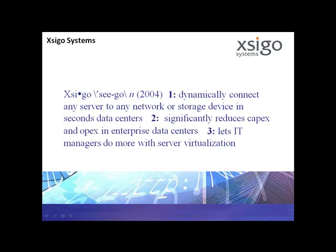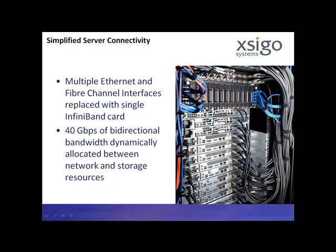Virtual I.O. offers dynamic connections from any server to any network or storage device in seconds, without server reboots. SEGO simplifies server connectivity by replacing multiple physical Ethernet and fiber channel interfaces with a single InfiniBand card, or two cards for redundancy. Each InfiniBand card supplies 40 gigabits of bi-directional bandwidth that can be dynamically allocated between network and storage resources. Many Ethernet and fiber channel cables are replaced by a single InfiniBand cable. In a typical deployment, one immediate business benefit is a 70% reduction in cards and cables.